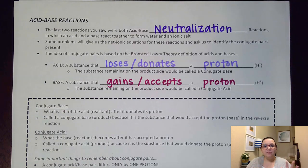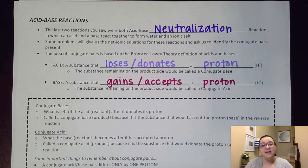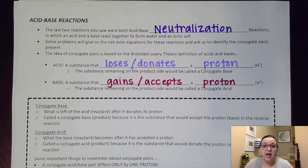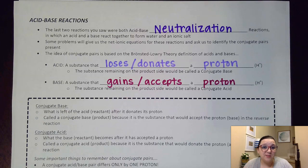Now, in that video what we did is we were given information to end up constructing a net ionic equation. What we're going to be talking about here is if we already have a net ionic equation for an acid-base reaction, how can we identify who is the acid, who is the base, and what the conjugate pairs would be.